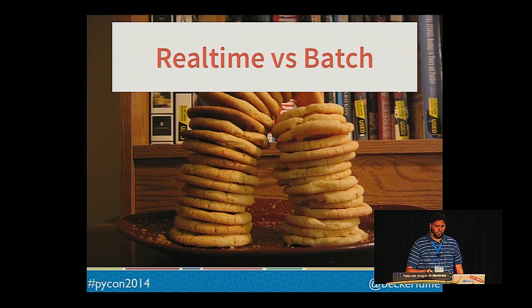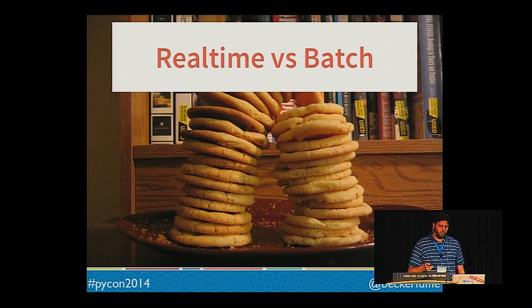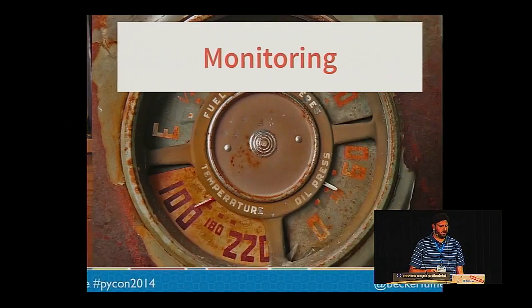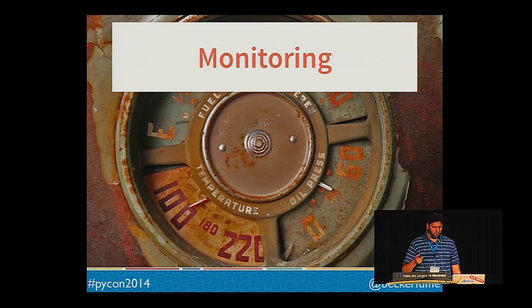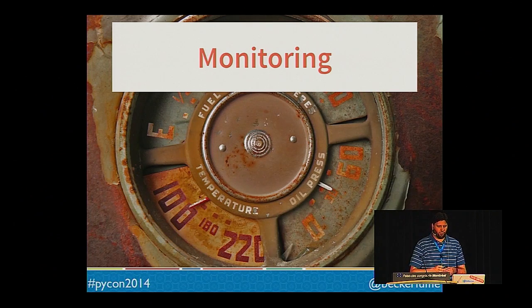Another way to scale your consumer is to convert it to processing requests in batches. Many algorithms in Scikit-learn scale super-linearly when you pass multiple samples to their predict method. The downside is you will no longer be able to process results in real time. However, if you're restricted on resources and this trade-off is acceptable, it might be worthwhile. Keep an eye on your queue sizes, alert when they back up, and scale your consumers as needed — possibly automatically using something like AWS Autoscale.